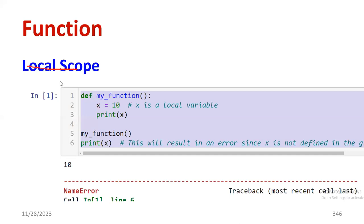Let's look at a simple program to understand this better. I've defined a user-defined function called 'my_function' using the DEF keyword. Inside the function, x is equal to 10 — x is the local variable. I print x inside the function. Now I come out of that particular function. Moving to line 5, I call my_function, and then I try to print variable x outside the function.